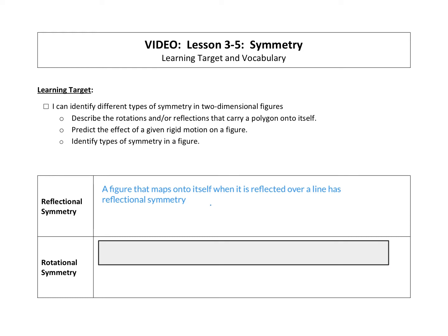This rectangle has reflectional symmetry. If I draw in a symmetry line right there, the figure would map onto itself across this line.